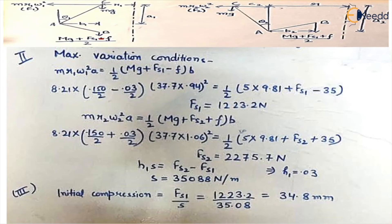Now H1S - H is the movement of sleeve and S is the spring constant. So Fs2 minus Fs1, we get the value of S. H1 is already given in the question, which is 30mm.